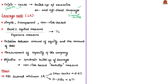Basel 3 introduced a simple, transparent, non-risk-based leverage ratio to act as a credible supplementary measure to risk-based capital requirements. The leverage ratio under Basel 3 is defined as the bank's capital measure divided by their exposure measure, expressed as a percentage. In simple terms, the leverage ratio is the relation between the amount of equity a company has and the amount of debt it is carrying in its books.